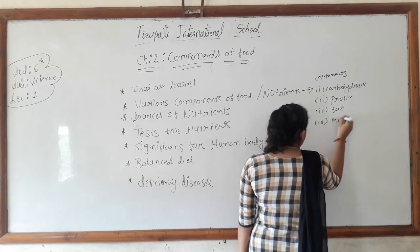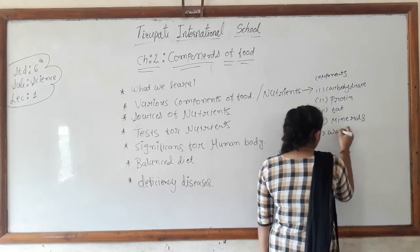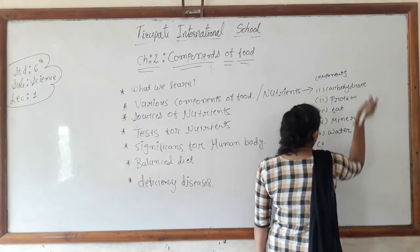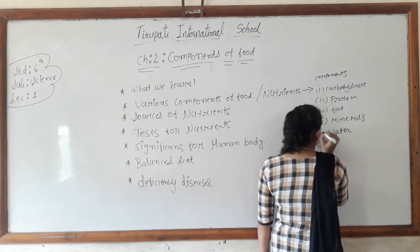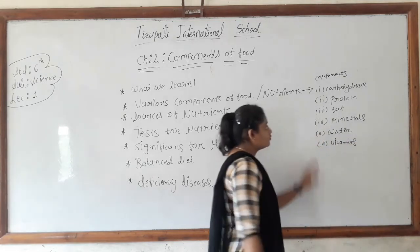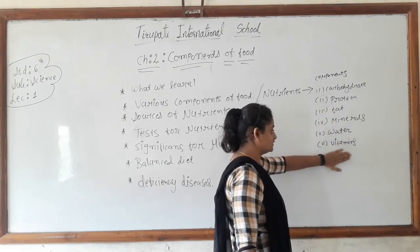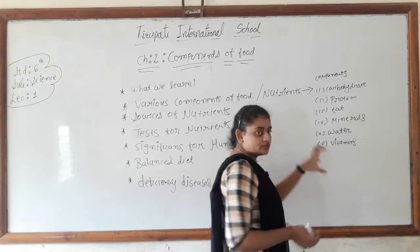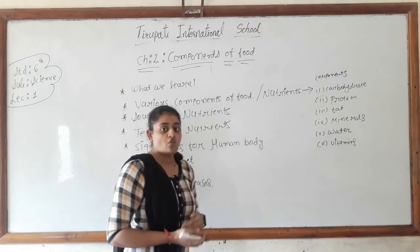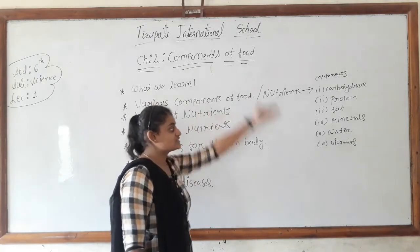The fourth component is minerals, then water, and then vitamins. So we talk about these components of the food — carbohydrates, protein, fat, minerals, water, and vitamins. These are the components of the food which are required by our body for growth and development.